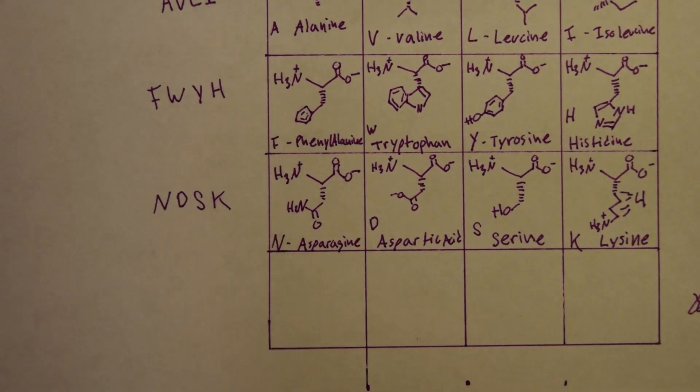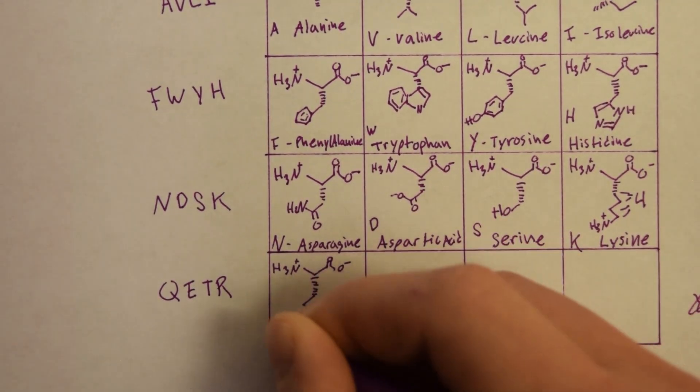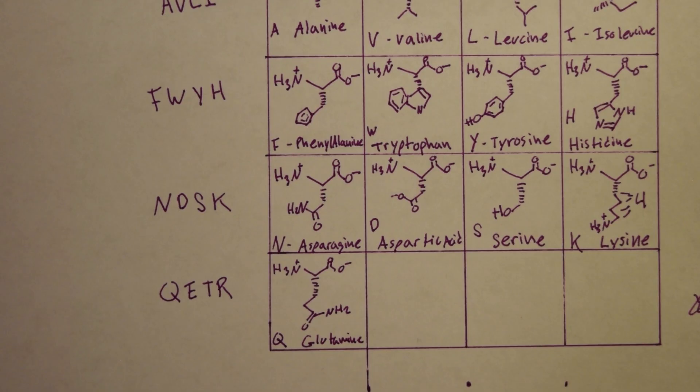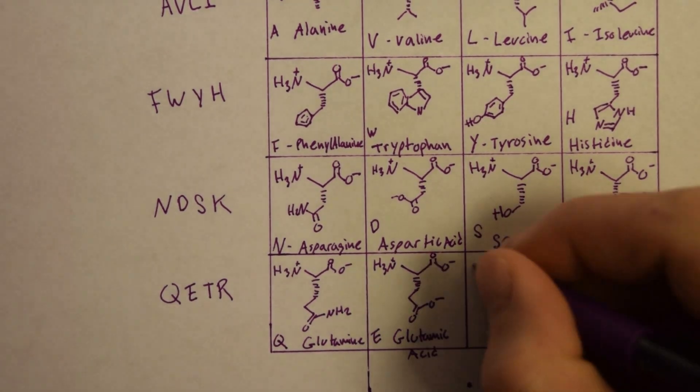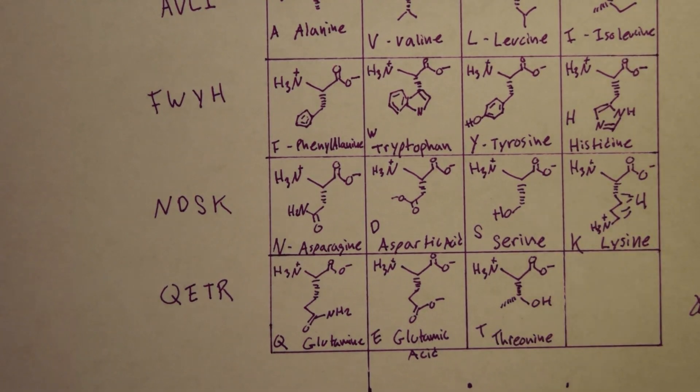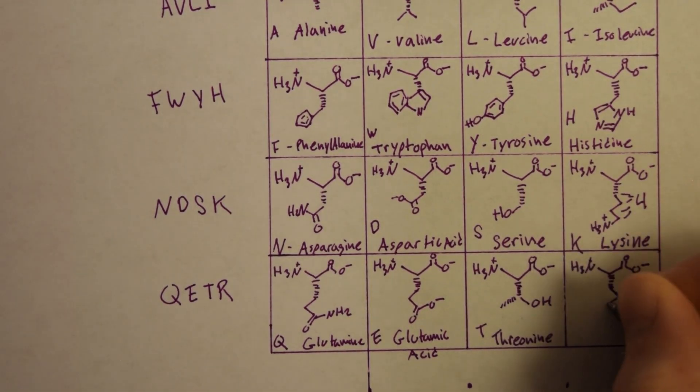The next line is QETR. Glutamine looks like asparagine but has an additional carbon. Glutamic acid looks like glutamine but has a carboxyl group. Threonine looks like serine but there is a methyl group added in the middle. Arginine has three nitrogens in it and has three carbon chains.